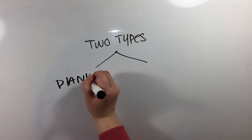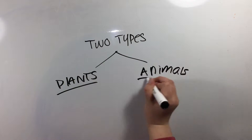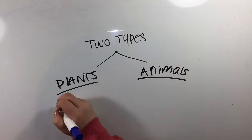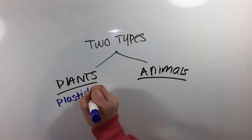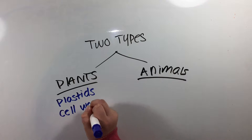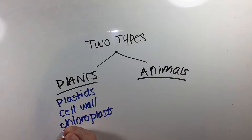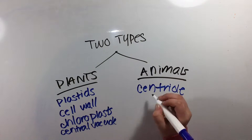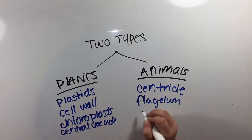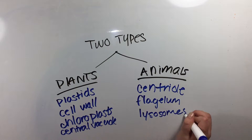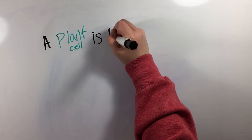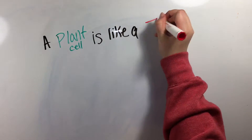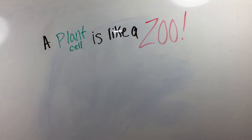Plant and animal cells differ by the organelles that they contain, which the other does not have. A plant cell is a lot like a zoo — let's see why.